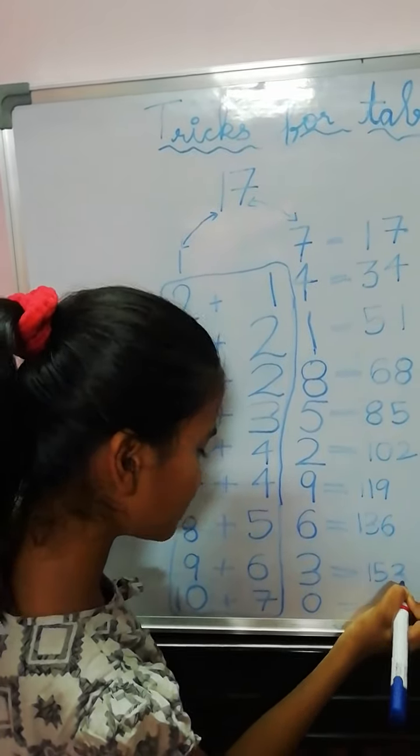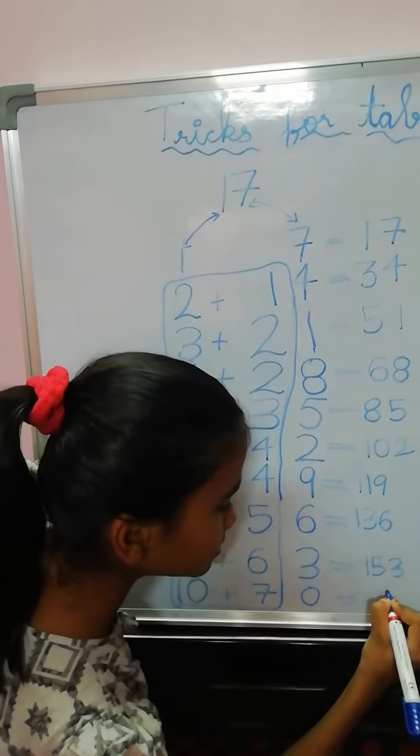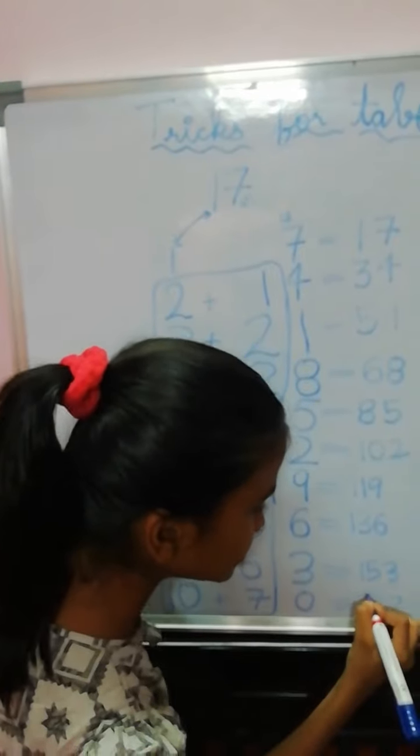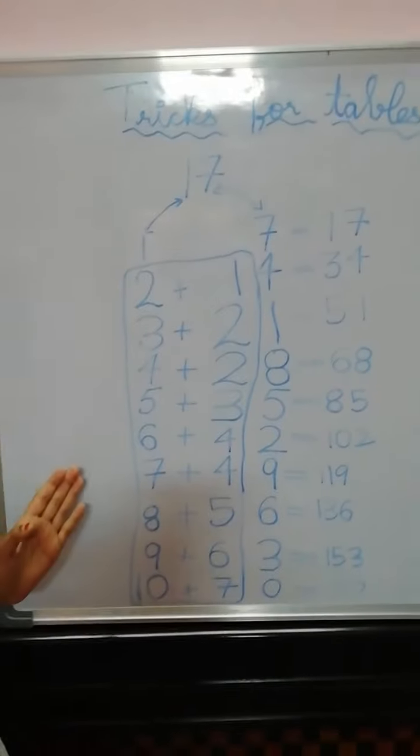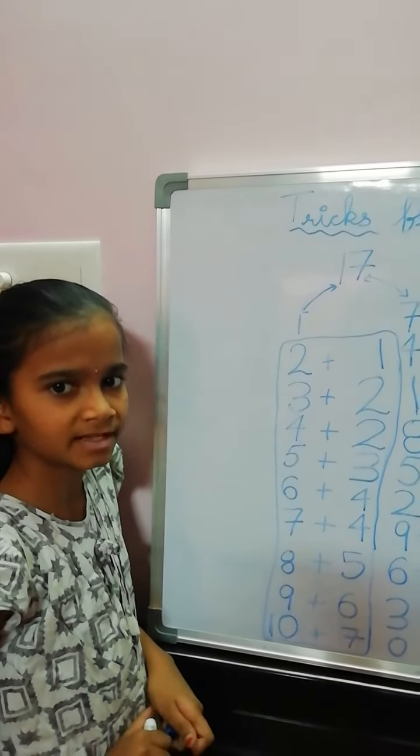17, 9's are 153. 10 plus 7, 17, and 0. This is our 17 table. This method is useful for every table.